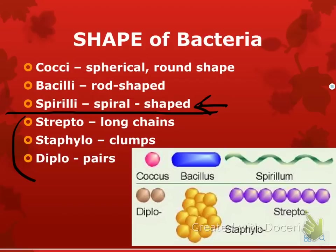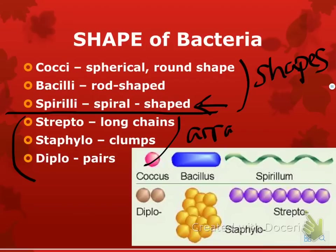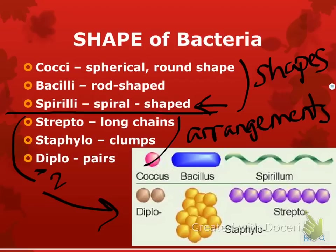The last three categories are arrangements. Diplo — 'di' means two, so you have two. Staphylo is a clump. And strepto is a chain. You hear these words when people are sick: staphylococcus means a clump of spherical round-shaped bacteria, whereas streptobacillus would be a chain of rod-shaped bacteria.